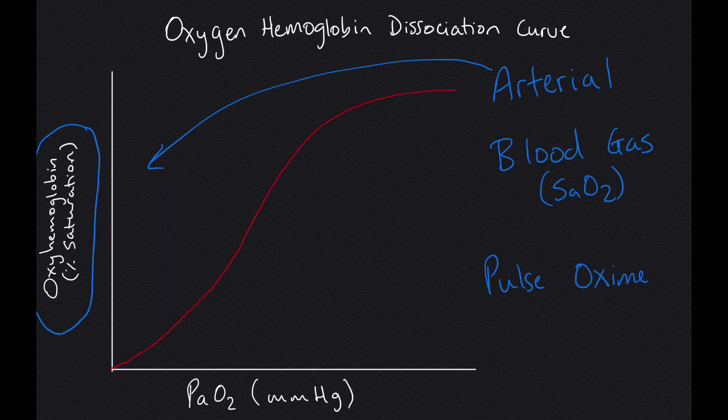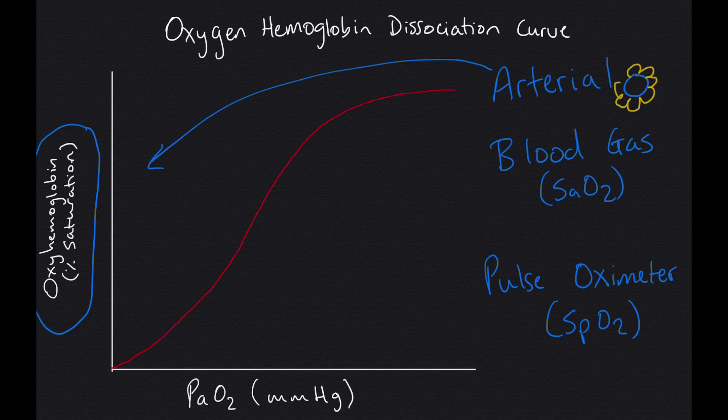When we use a pulse oximeter, we're measuring the patient's SpO2. We use the pulse oximeter to provide us with an indirect and non-invasive way of monitoring a patient's SaO2 levels. The pulse oximeter doesn't come without some limitations in quality and accuracy. For the purposes of this video, we won't be diving into those.